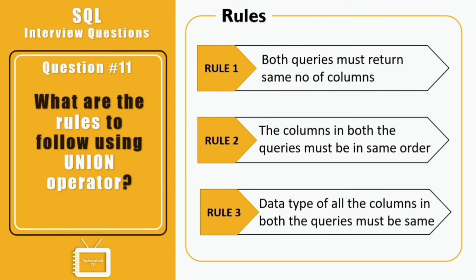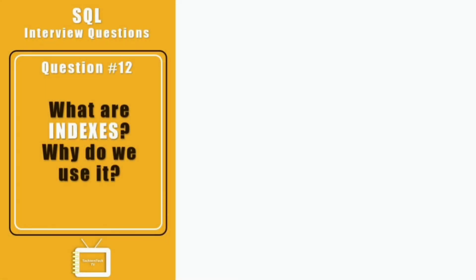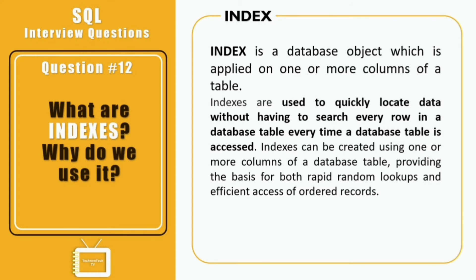Question twelve: what are indexes and why do we use them? An index is a database object applied on one or more columns of a table. It is used to quickly locate data without having to search every row every time the table is accessed. It can be created using one or more columns, providing the basis for rapid random lookups and efficient access to ordered records. When a column is indexed, the database creates a pointer to each value in that column, significantly improving query execution time.